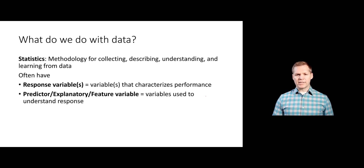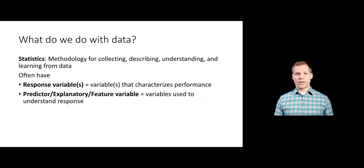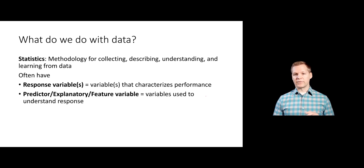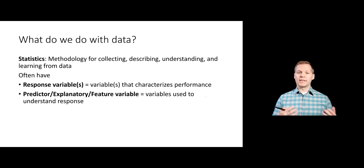In this process, we usually have what we call a response variable that characterizes the performance of our study in some way. You might have more than one, but we'll focus on having one response variable. What we try to do is take the other variables that we collect — which you might call predictors, explanatory variables, or feature variables, there are a bunch of names for them — and relate them to that response in some way.